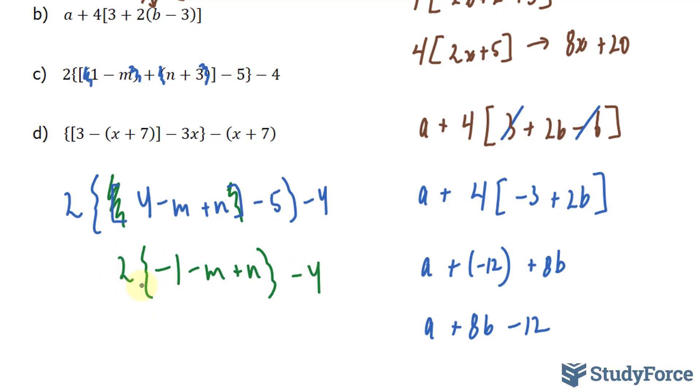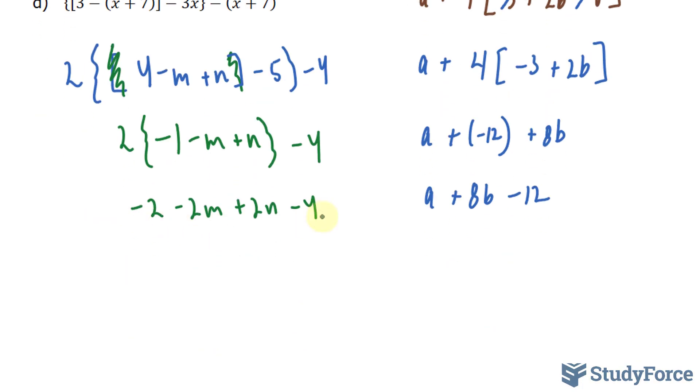That gives us 2{-1 - m + n} - 4. Now we expand the 2 into the 3 terms inside these brackets. This gives us -2 - 2m + 2n - 4. Since -2 - 4 is -6, we have -2m + 2n - 6. That's the answer to question C.